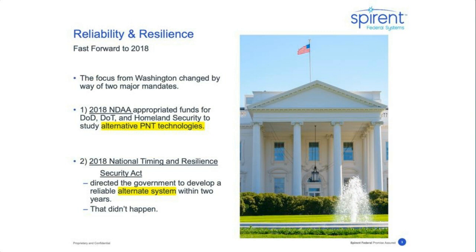The National Defense Authorization Acts are a series of laws passed every year specifying how to allocate federal budget funds. The 2018 NDAA appropriated funds for DOD, DOT, and Homeland Security to study alternative PNT technologies. In that same year, President Trump issued the 2018 National Timing and Resilience Security Act, directing the government to develop a reliable alternate system within two years. Not only has an alternate system not been named, but we are now framing the work as developing alternatives — in the plural.